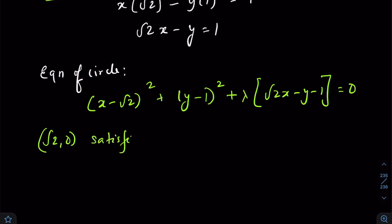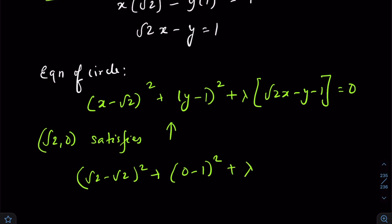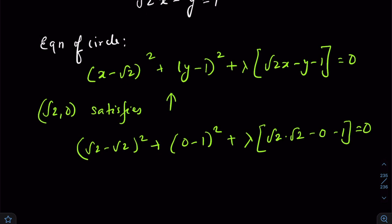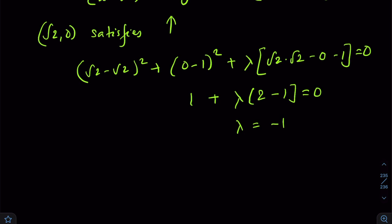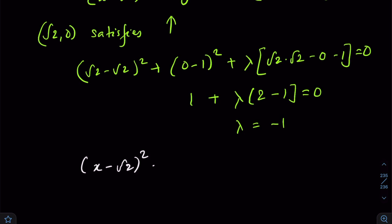Substituting (√2, 0) into the equation: (√2 − √2)² + (0 − 1)² + λ(√2·√2 − 0 − 1) = 0, which gives 0 + 1 + λ(2 − 1) = 0, so 1 + λ = 0, giving λ = −1. Substituting back, the first circle equation is: (x − √2)² + (y − 1)² − (√2·x − y − 1) = 0.